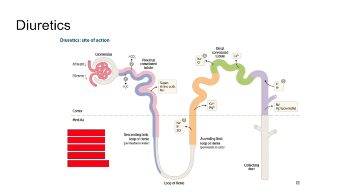Number one: what is causing H2O to be increased in the proximal convoluted tubule? Mannitol. Mannitol is our osmotic diuretic, drawing water into the PCT, into the nephron, and then excreting it.